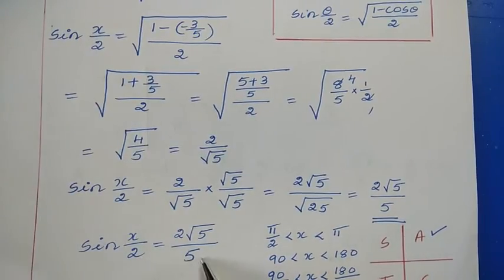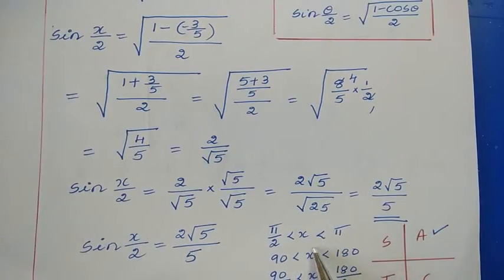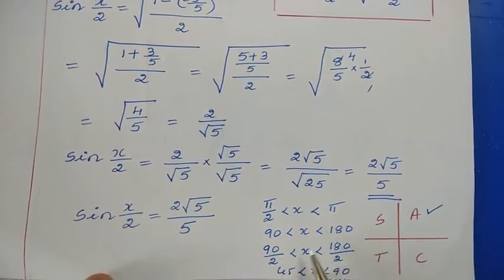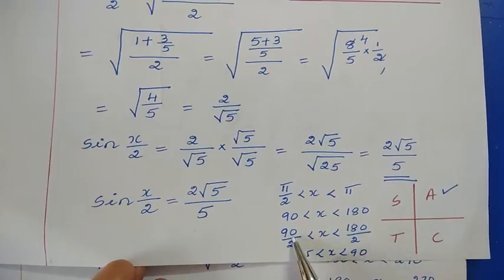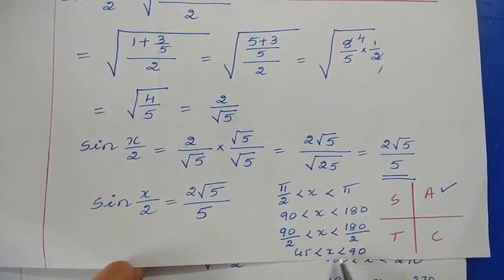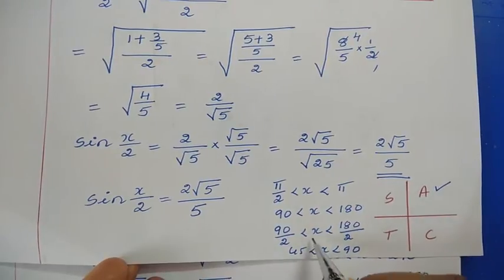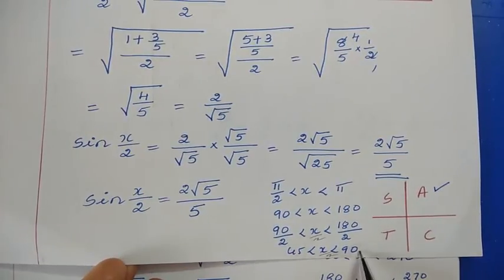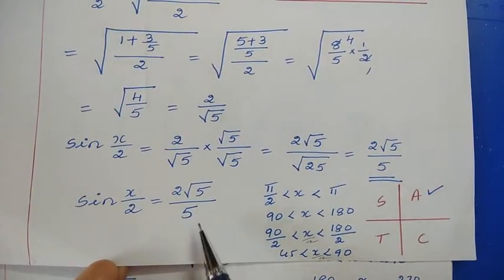We need to verify the sign. Since x is in the second quadrant: π/2 < x < π, dividing by 2 gives π/4 < x/2 < π/2, meaning x/2 lies between 45° and 90°. This is the first quadrant, where all trigonometric functions are positive, so sin(x/2) is positive.